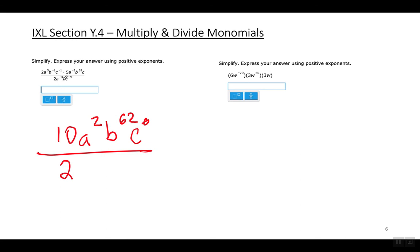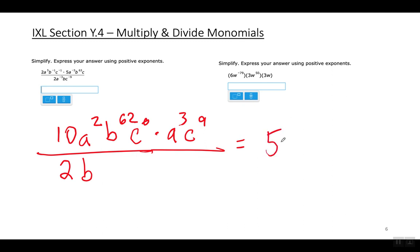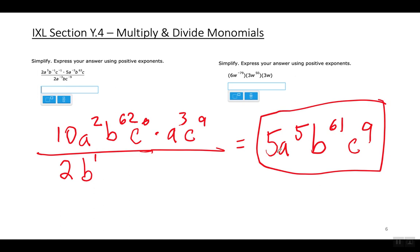On the bottom, move a to the negative third power to the top — it becomes a to the third power. Then there's b, and c to the negative ninth power moves to the numerator, making the exponent positive. Multiplying everything: the final answer is 5a to the fifth power, b to the sixty-first power, and c to the ninth power.